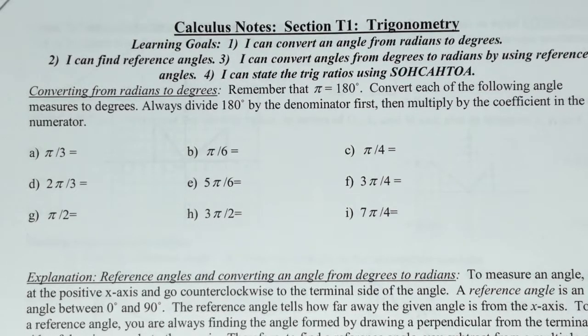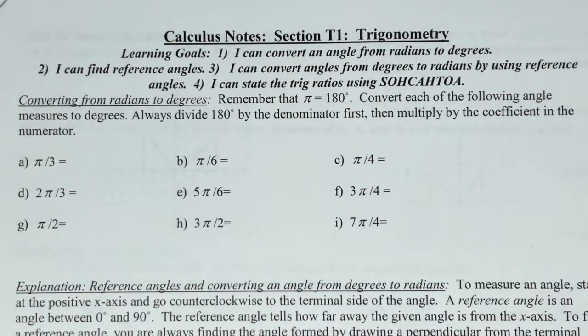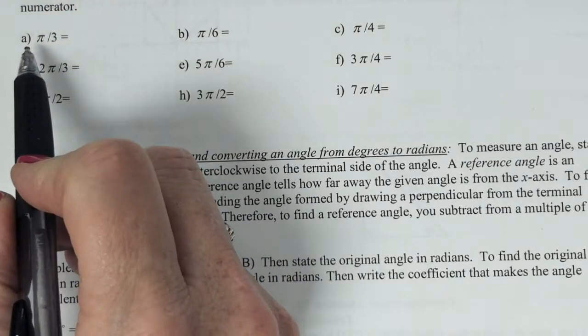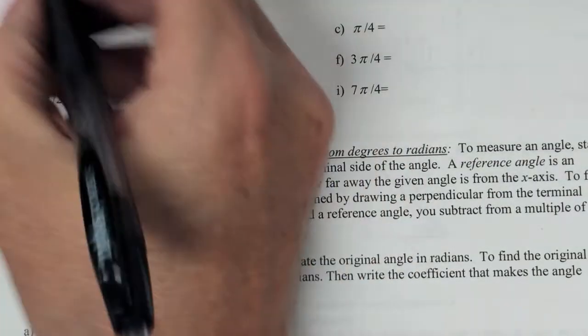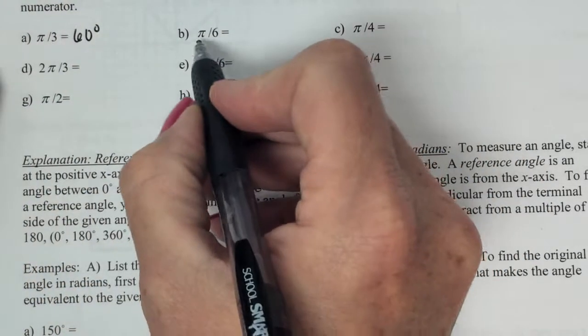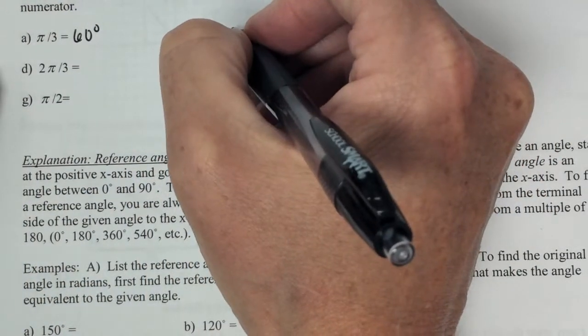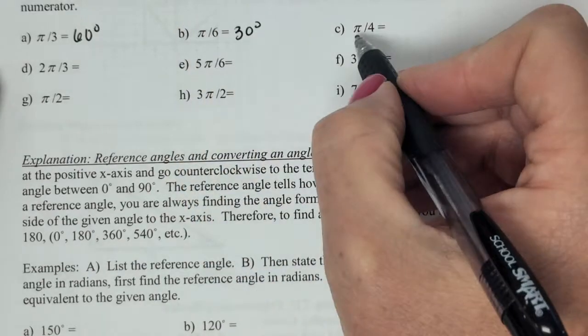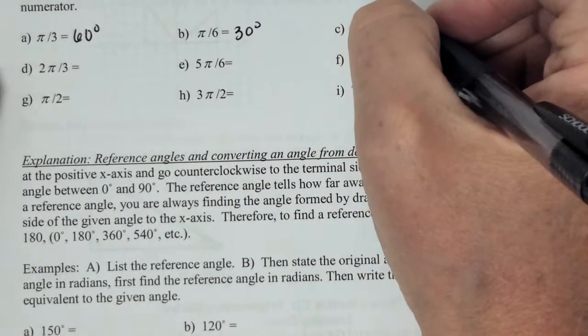All right. So the first row there, we're converting from radians to degrees. This should have gone pretty fast. We know pi is 180. So what's 180 divided by 3, everybody? 60. What was 180 divided by 6? 30. And then 180 divided by 4? 45.